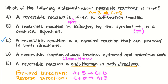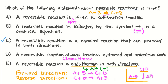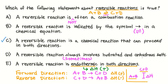Our final answer choice says that a reversible reaction is endothermic in both directions. Recall that endothermic means that the enthalpy change for the reaction is positive, meaning that overall the reaction takes in energy. Looking at the sketch of an energy diagram, we can see that the forward reaction, where A plus B reacts to form C plus D, is endothermic since the change in enthalpy is positive. But in the reverse direction, where C plus D reacts to form A plus B, we would get a negative change in enthalpy, meaning that the reverse reaction is exothermic, not endothermic. So a reversible reaction will be endothermic in one direction but exothermic in the other direction. Of the statements we looked at, the only one that was true about reversible reactions is that a reversible reaction can proceed in both directions.